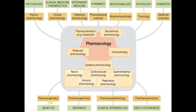Subdivisions include pharmacogenetics, pharmacogenomics, pharmacoepidemiology, pharmacoeconomics, medical chemistry, toxicology, pharmaceuticals, pharmaceutical sciences, veterinary pharmacology, clinical pharmacology, and psychopharmacology. Pharmacology itself is subdivided into pharmacokinetics, drug metabolism, biochemical pharmacology, molecular pharmacology, chemotherapy, and systems pharmacology — which includes neuropharmacology, cardiovascular pharmacology, gastrointestinal pharmacology, immunopharmacology, and respiratory pharmacology.